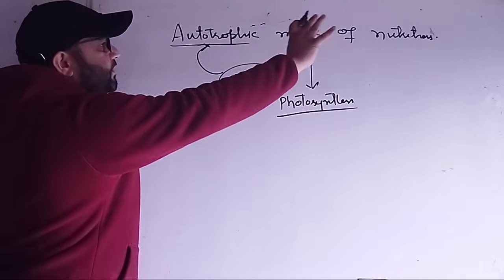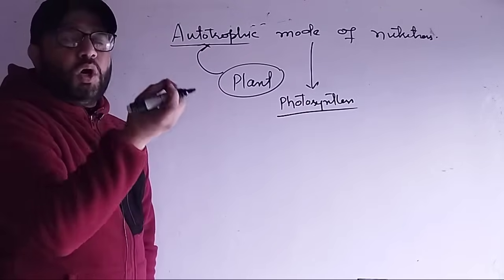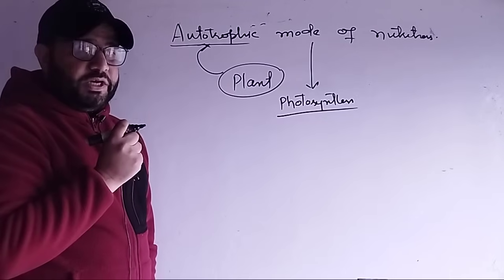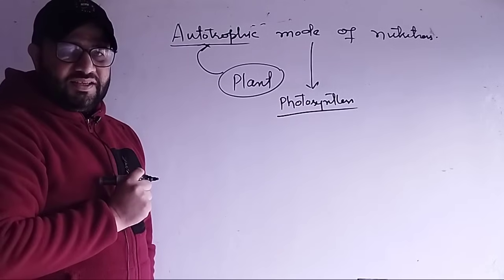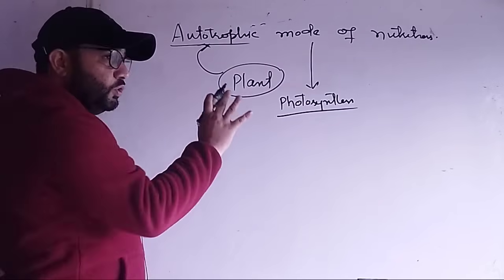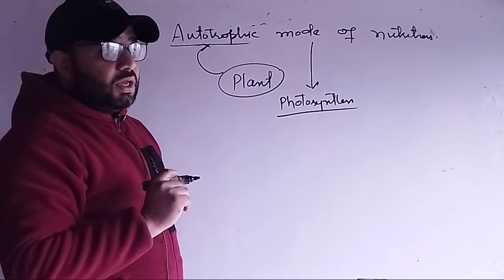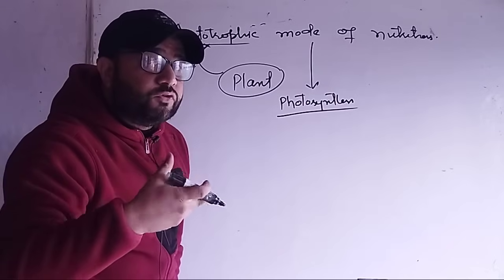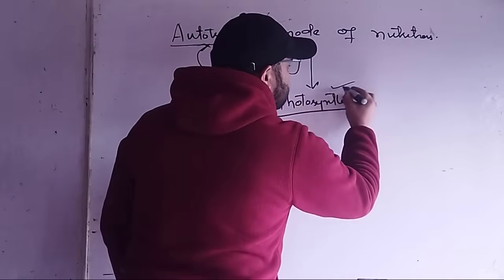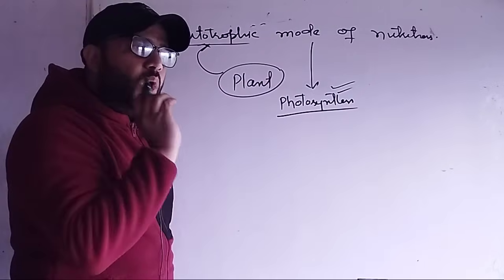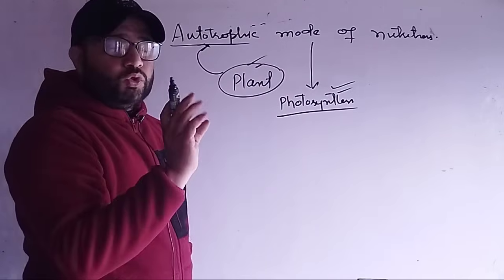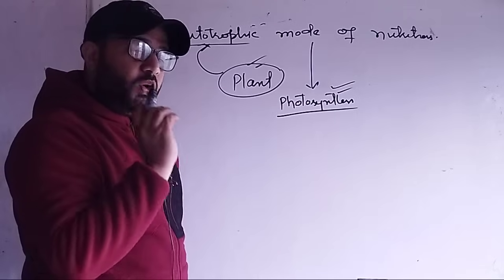When we talk about autotrophs, they are called photo-autotrophs with the help of sunlight. Some bacteria get their nutrition through chemicals — that's called chemo-autotrophs. For understanding the autotrophic mode of nutrition: what kind of autotrophs make food? They make food through a process called photosynthesis. Photosynthesis is shown by plants. Photo-autotrophs use sunlight, which is a very important component.